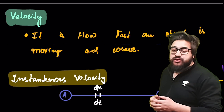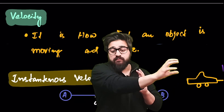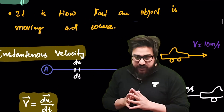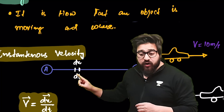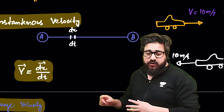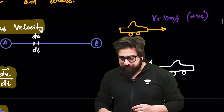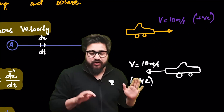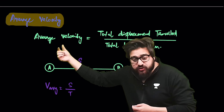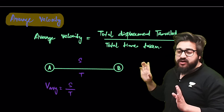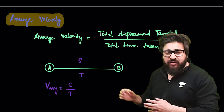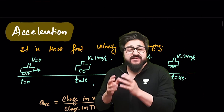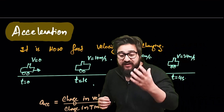Now comes velocity. Velocity means how fast you are moving and in what direction. The faster you move, the more velocity you have. Velocity is displacement divided by time. Instantaneous velocity — your velocity at any particular instant — is written as dx/dt. If a car moves to the right, velocity is positive; to the left, velocity is negative. Average velocity is total displacement divided by total time taken: Δs divided by Δt.